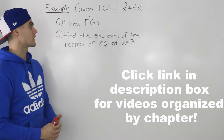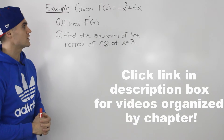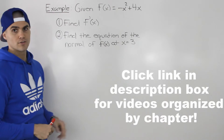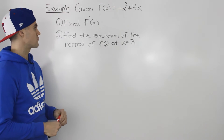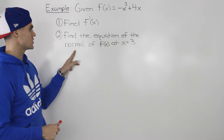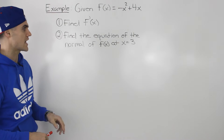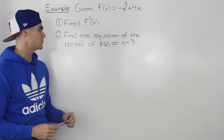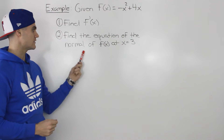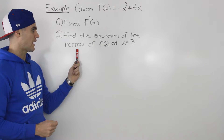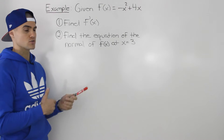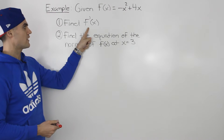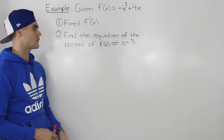Moving on to the next example, given the function f(x) = -x² + 4x, we have to find the derivative f'(x) and then find the equation of the normal of f(x) at an x value of 3. You may be asking yourself what a normal is — I'll explain that in part two once we get there. But for now let's just find the derivative of this function.